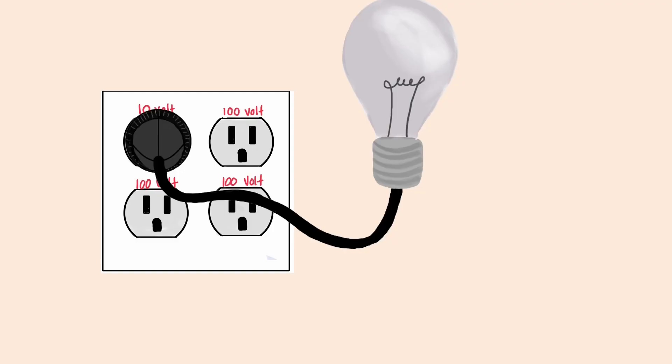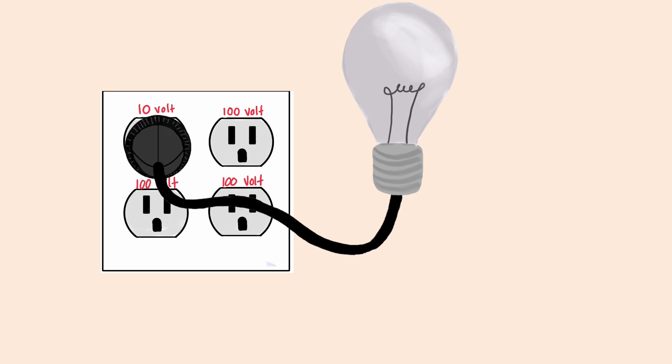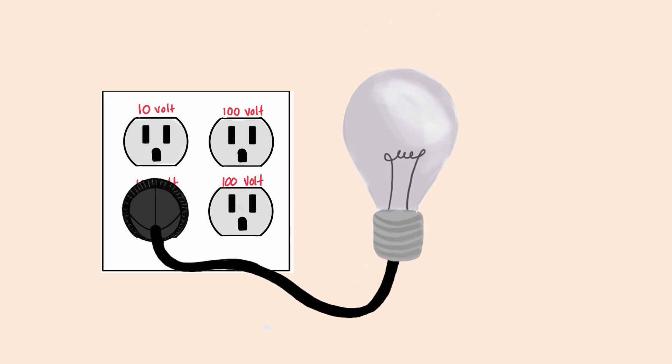Imagine in the light bulb situation, you had one outlet that had a lower voltage than the others. So you could still change the color of the bulb, but it would always be dimmer than the other colors. However, just because one color is dimmer doesn't mean that the other colors aren't super bright.